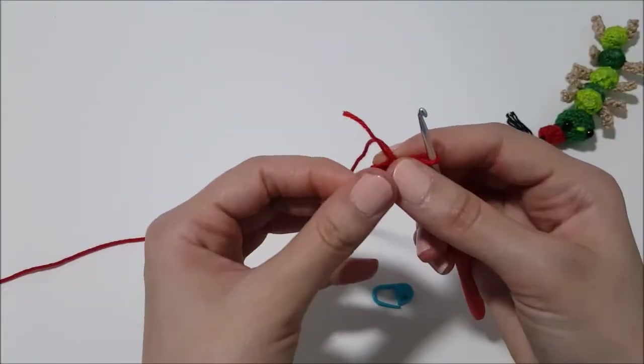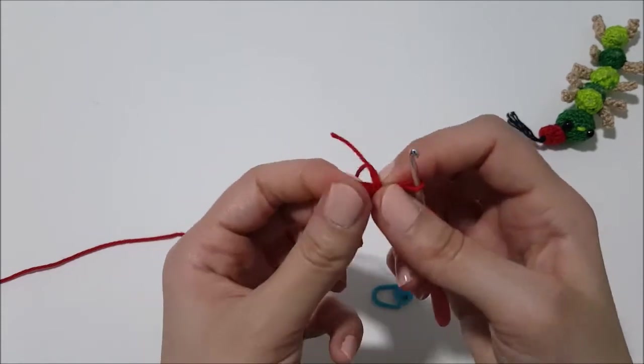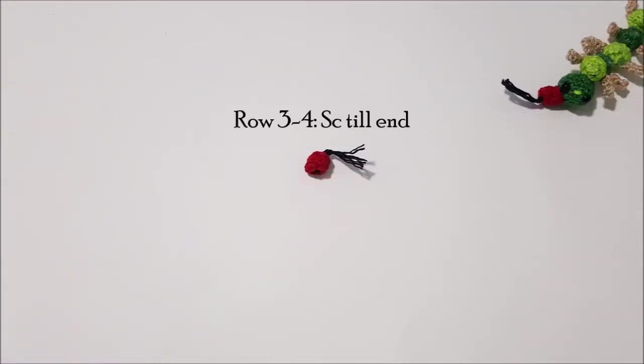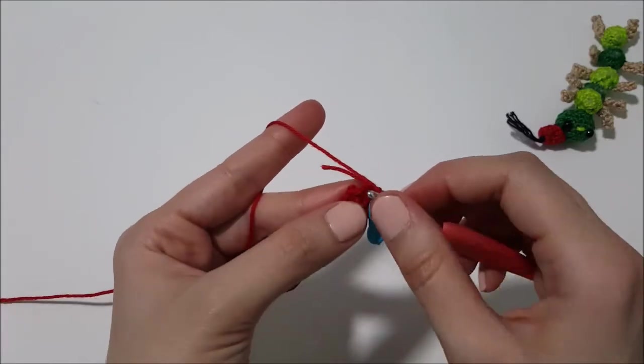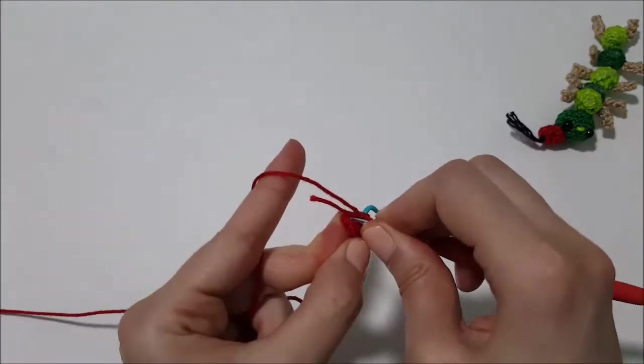Now pull the tail a little bit. Row 3 till row 4 is single crochet until the end.